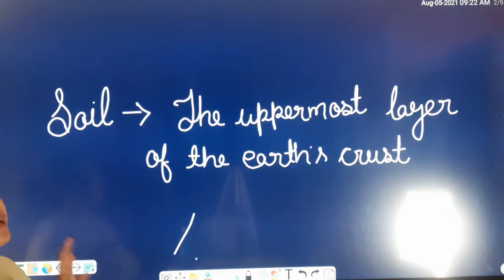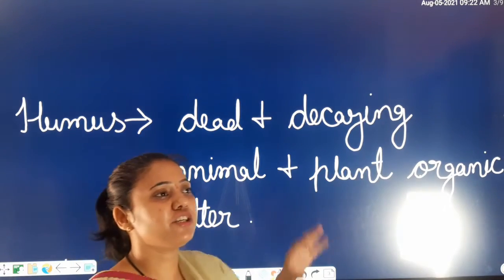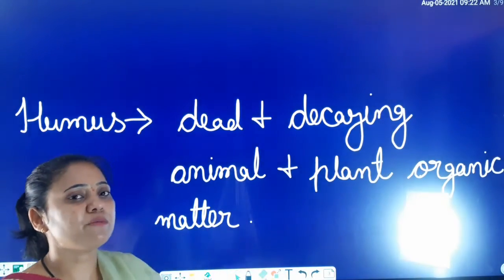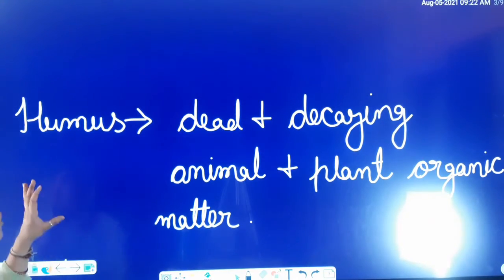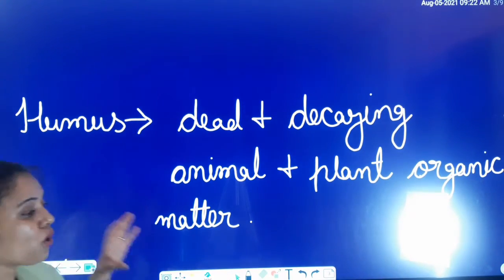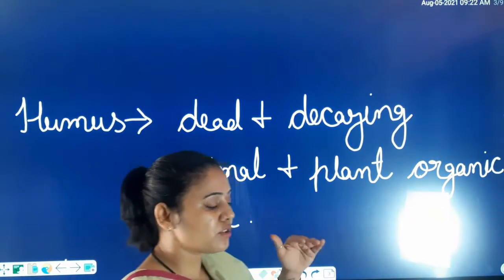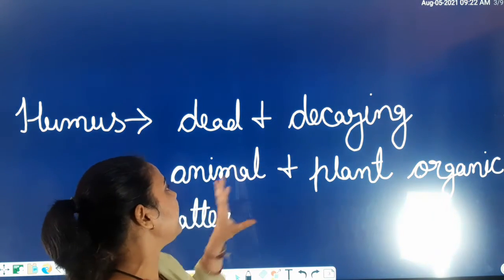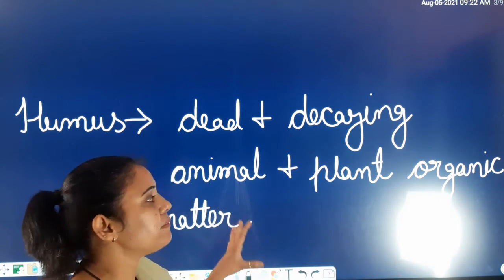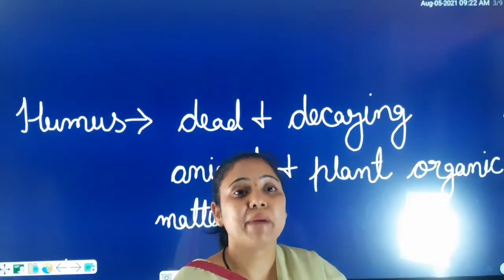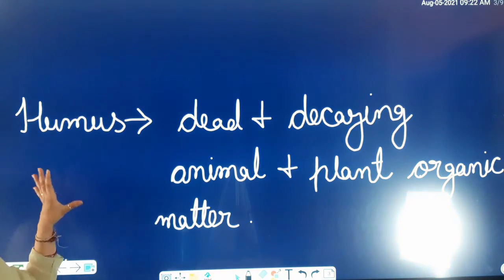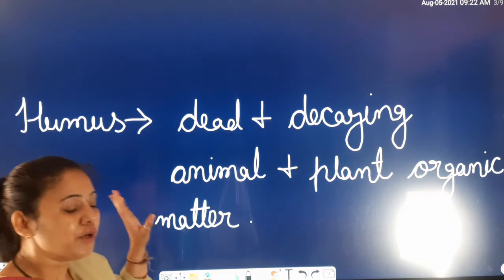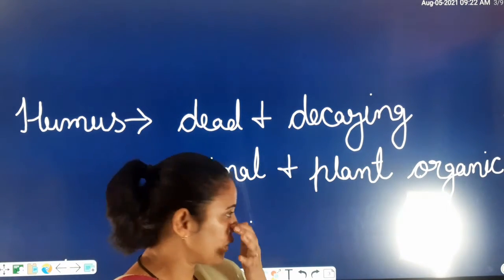We have learned that the earth's crust is the top layer of the soil. The layer of soil is present, mostly consisting of dead and decayed animals and plants — organic matter. So we are talking about humus. What is humus? I am going to explain it a little bit.